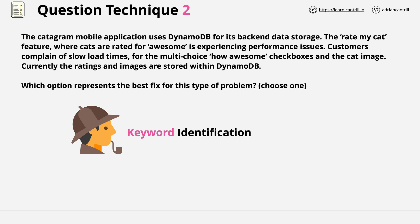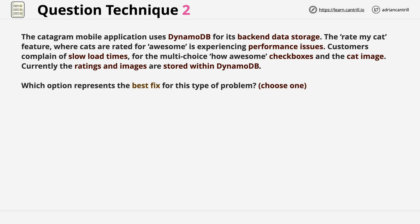Now that you've done that, let's go ahead and highlight which keywords I identified so we can compare. This is an interesting question. The keyword which jumped out at me straight away is DynamoDB, and that's important as it suggests that the application uses a NoSQL database structure and that it's designed for scale.